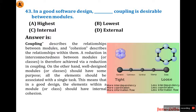A reduction in interconnections between modules is achieved via reduction in coupling. On the other hand, well-designed modules should have a single purpose and all elements should be associated with a single task — this means elements within a module should have high internal cohesion. Simply put: coupling between modules should be low, and cohesion within a module should be high. Low coupling and high cohesion is the best technique for software design.